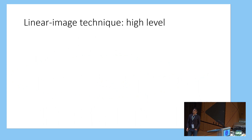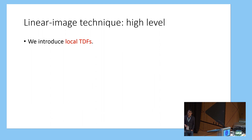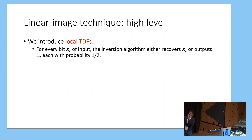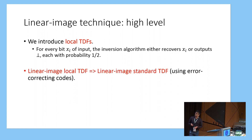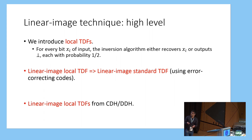We achieve linear image TDFs via a primitive that we call local TDFs. Under standard TDFs, the inversion algorithm recovers the entire input to the TDF algorithm. Local TDFs relax this perfect correctness by allowing the inversion algorithm to be local: for every bit of the input, the inversion algorithm will either recover that bit correctly, or it will give up and output the bottom symbol. Each of these two will happen with probability one half. We show that if we can build linear image local TDFs, then we can use error-correcting codes to boost correctness to get standard TDFs without destroying the linear image property.